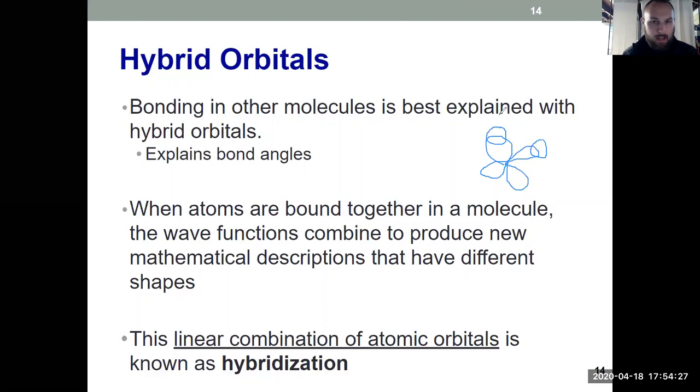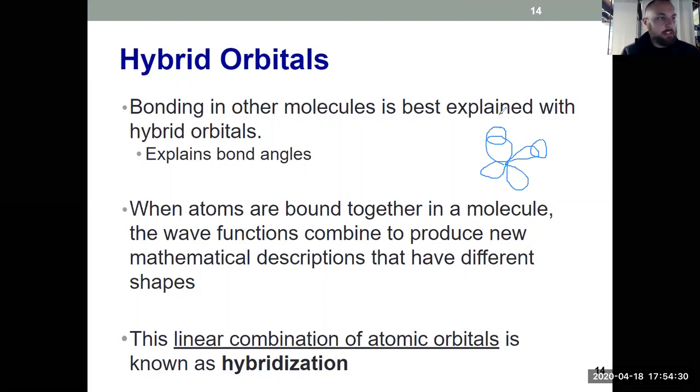The reason we see that difference is because when atoms come together in a molecule, the wave functions that we introduced in Chapter 6 that discussed regions of probability for electrons to reside are one thing in an atom, but they're another thing in a molecule. And so they get different shapes.